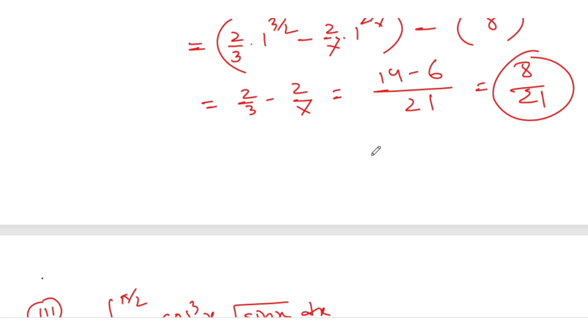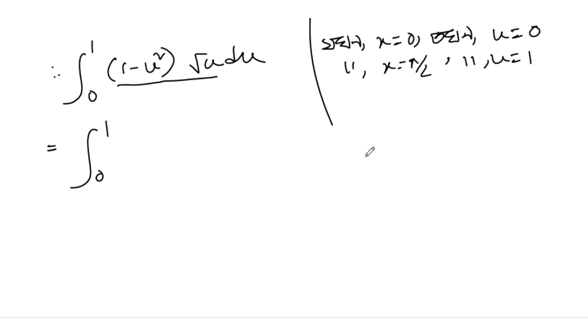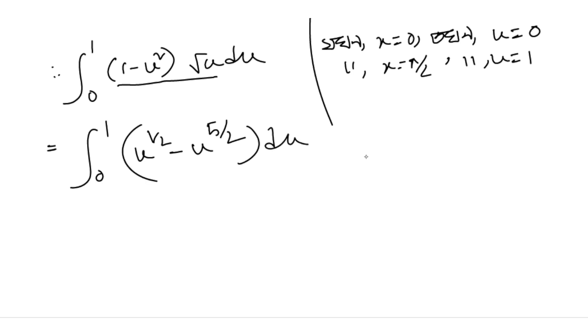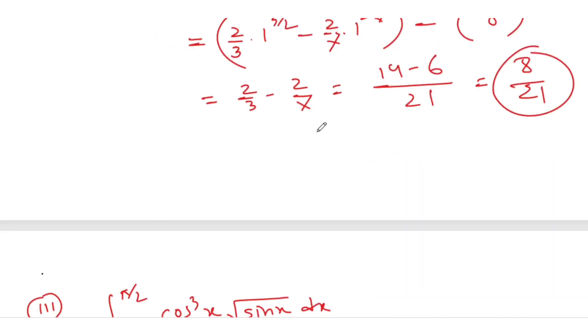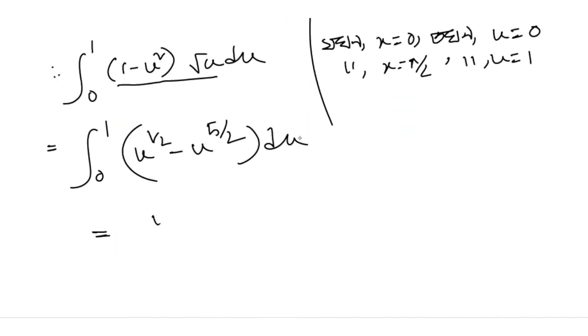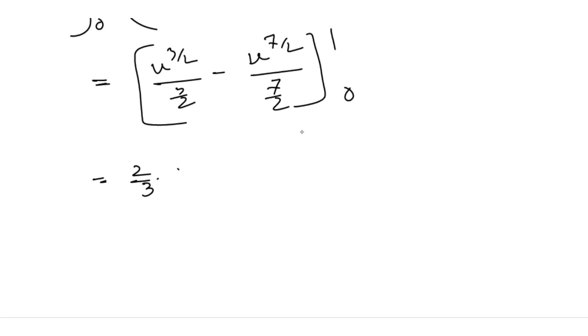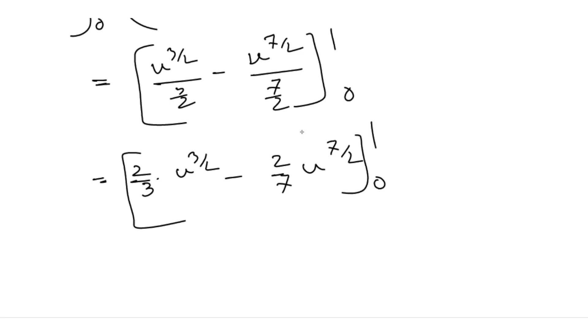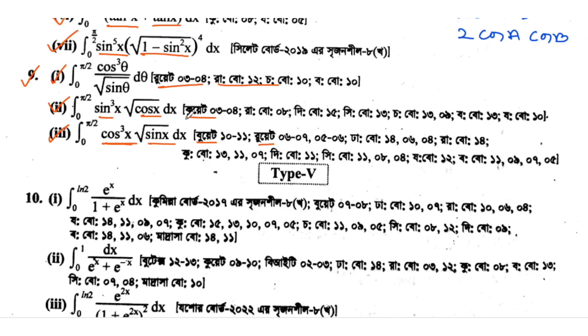Working through: u to the negative 1/2 minus u to the 3/2 integrates to (2/3)u to the 3/2 minus (2/7)u to the 7/2, evaluated from 0 to 1. At u equals 1: 2/3 minus 2/7. Finding a common denominator: 14 minus 6 over 21, which equals 8/21. So the final answer is 8/21.